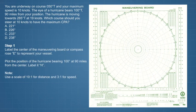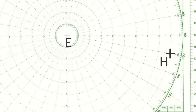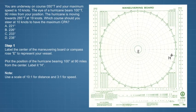Label the center of the maneuvering board or compass rose E, to represent your vessel. Plot the position of the hurricane bearing 1-0-0 degrees at 90 miles from the center. Label it H. Note, use the largest scale possible. For hurricane avoidance problems on U.S. Coast Guard exams, a scale of 10 to 1 for distance and 3 to 1 for speed throughout the solution often work best.